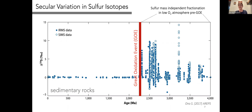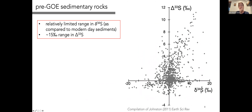Looking at the same sedimentary data another way — δ³³S versus δ³⁴S for pre-2.3 Ga rocks — there's a relatively limited range in δ³⁴S, from about −20 to 20 per mil, with most below ±10 per mil, but a large range in Δ³³S on the order of 15 per mil. This lays the groundwork for sulfur isotopes in sedimentary rocks before the Great Oxygenation Event.